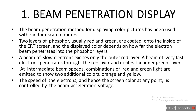At intermediate beam speeds, a combination of red and green light are emitted to show two additional colors: orange and yellow. So basically, if the electron beam is fastest it excites the green color, if it is too slow it excites only the outer red layer, and at intermediate speeds it can show orange or yellow depending on the speed.